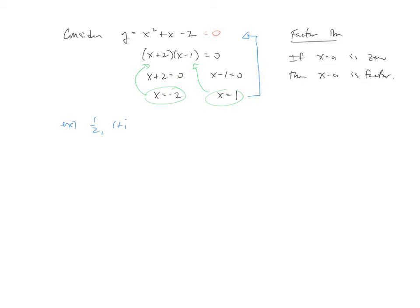The Conjugate Pairs Theorem says that if a plus bi is a zero, then a minus bi is also a zero. And that kind of makes sense. You've solved enough equations by now to know that when you get complex solutions, they always come in that plus or minus form because of how complex solutions are generated.